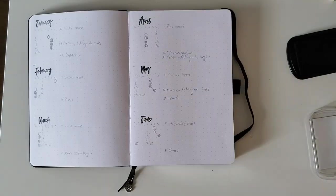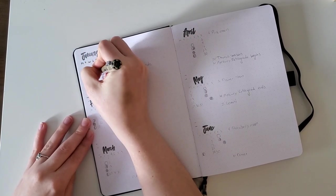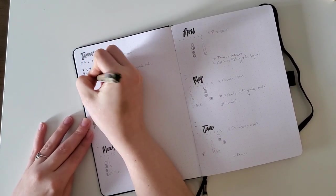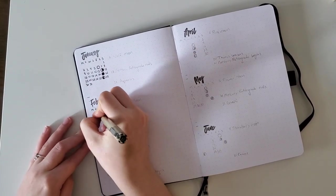So I just do the one future log for all my months, and then I can always look back if I need to know how many days a month has or what day the week starts on.